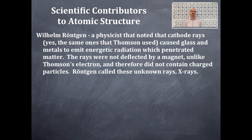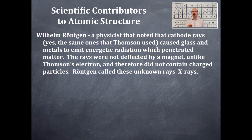William Röntgen, a physicist, noted that cathode rays — the same ones that Thomson used — caused glass and metals to emit energetic radiation which penetrated matter. These rays were not deflected by a magnet, unlike Thomson's electron, and therefore did not contain charged particles. Röntgen called these unknown rays x-rays.